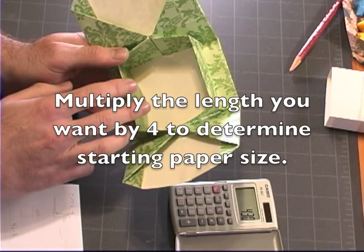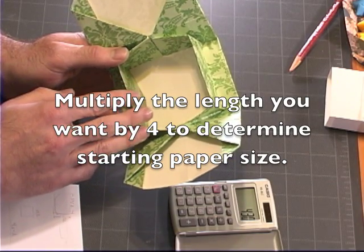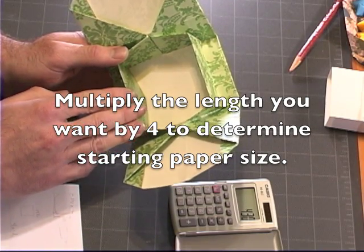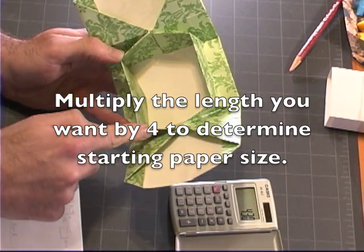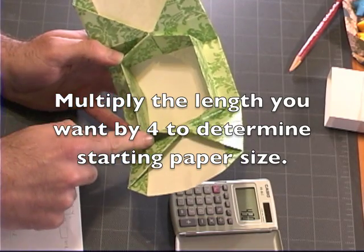So to figure out the size of paper you will need, you figure out how long you want each of these sides to be and multiply that by 4.